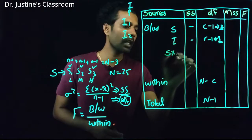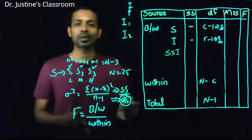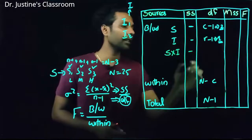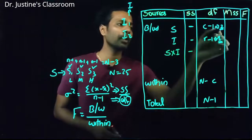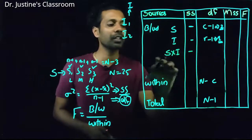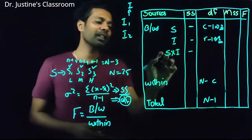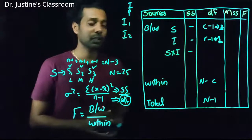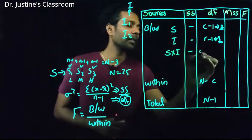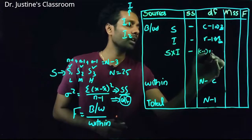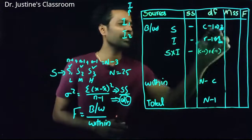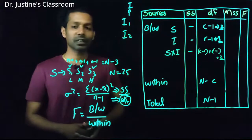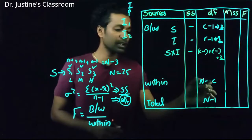A key reason for factorial design is to understand the interaction effect — how sound and illumination together affect the dependent variable. The degree of freedom for the interaction of sound and illumination (written as S × I) is calculated by multiplying: (C minus 1) times (R minus 1). Just multiply those two values to get the interaction df.